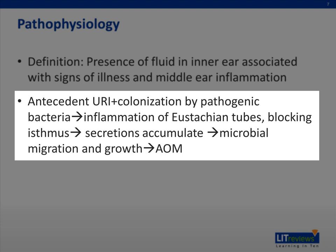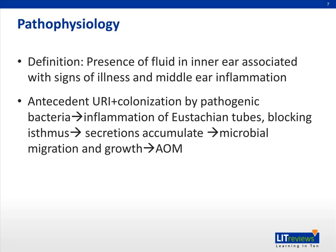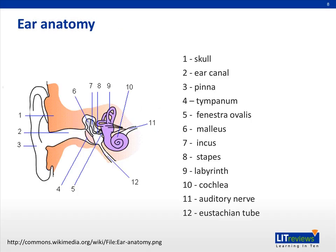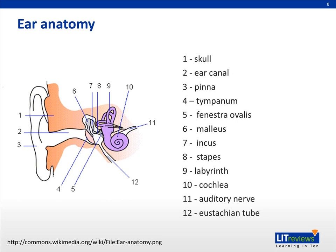Because of this obstruction, secretions accumulate, leading to bacterial migration and subsequent growth. Inflammation of the eustachian tube, which is labeled as number 12, leads to obstruction of the isthmus and fluid accumulation within the middle ear that is subsequently infected by bacteria. This can be visualized on exam as fluid behind the tympanic membrane, which is labeled as number 4.